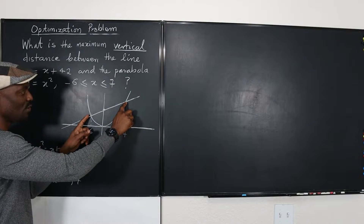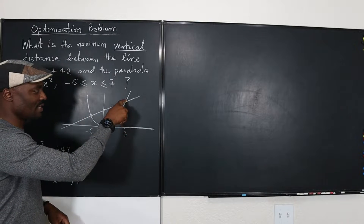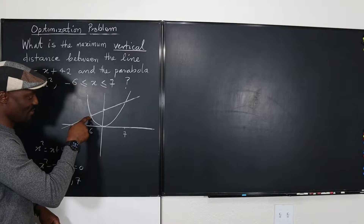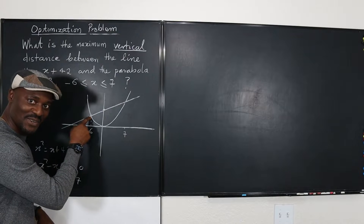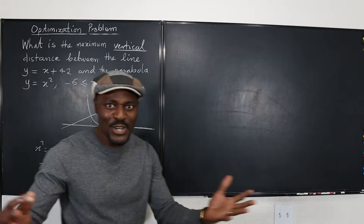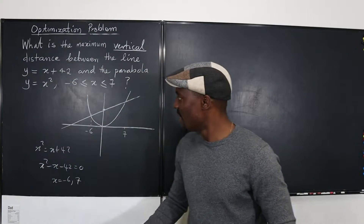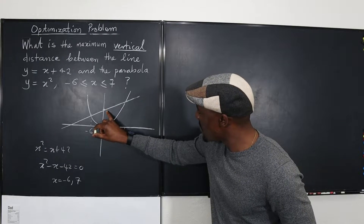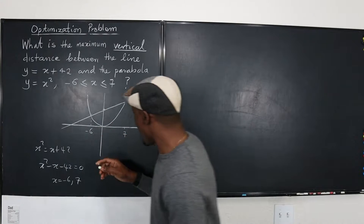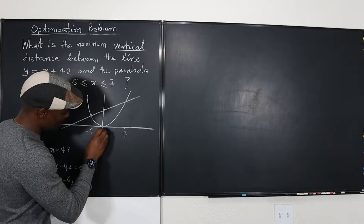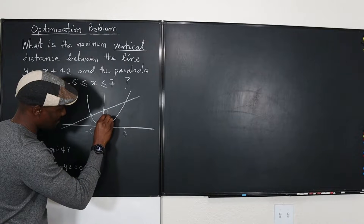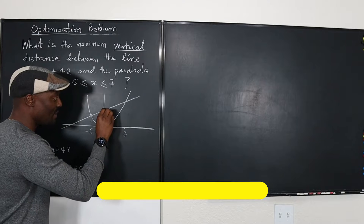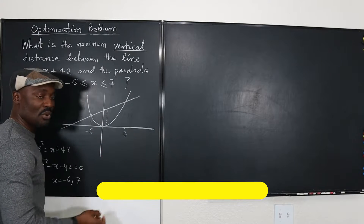What's the distance between the two functions at x equals negative six? It's zero. What's the distance at x equals seven? It's zero. But we just want to find where the distance is maximum. I think the maximum point should be somewhere in between — we will investigate to find out exactly where.